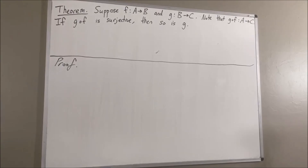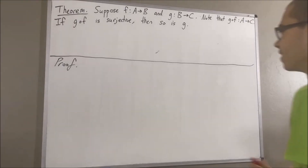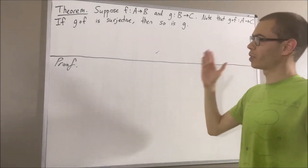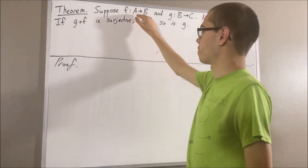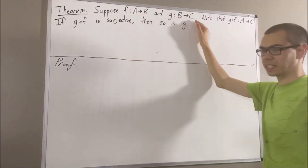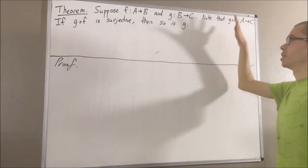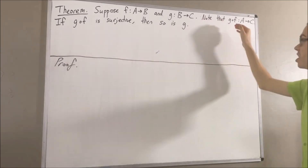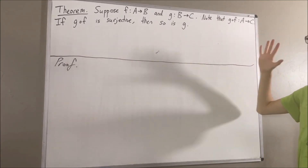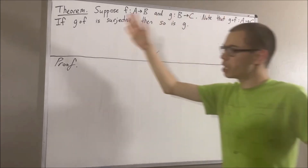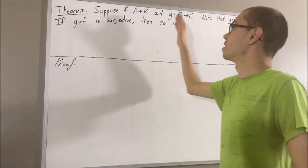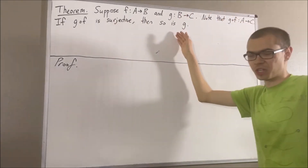Hello! In this video we are going to prove the following theorem. Suppose f is a function from A to B and g is a function from B to C. Note that the composition g compose f is a function from A to C. If g compose f is surjective, then g is also surjective.